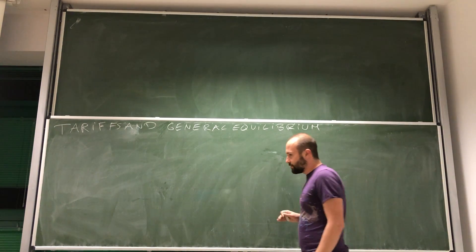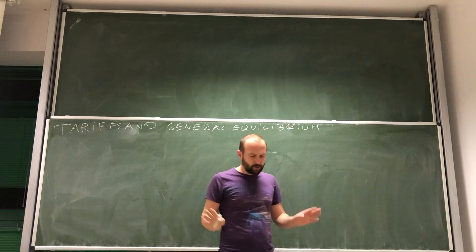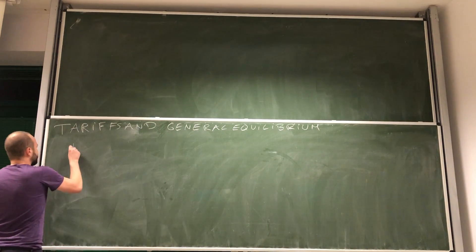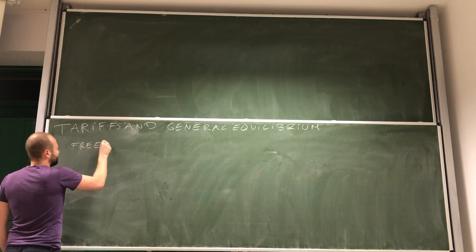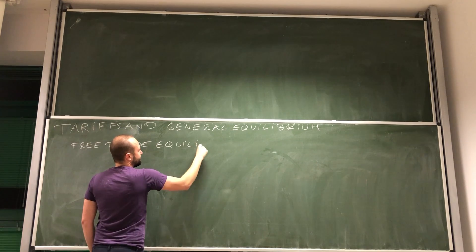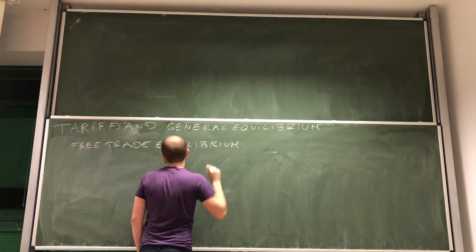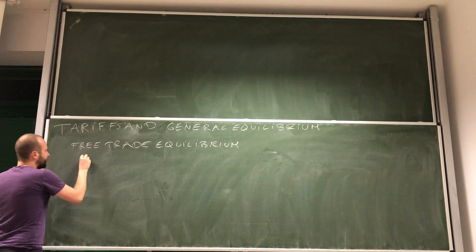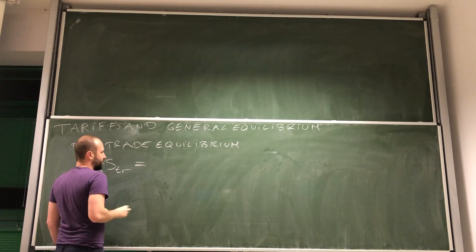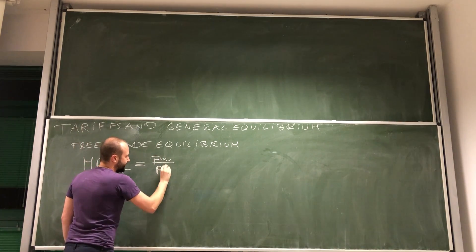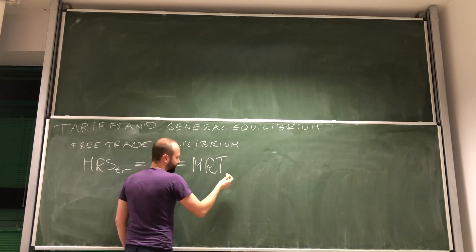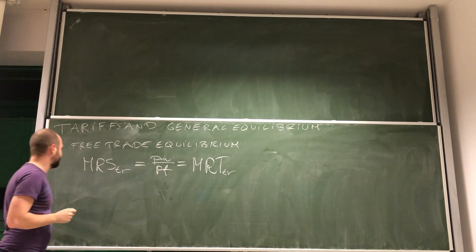First, the equilibrium condition. Let's go right to the trade equilibrium: if we have free trade equilibrium, the condition is that the marginal rate of substitution with trade must be equal to the price of manufacturers to price of food ratio, and this must be equal to the marginal rate of transformation also in trading equilibrium.